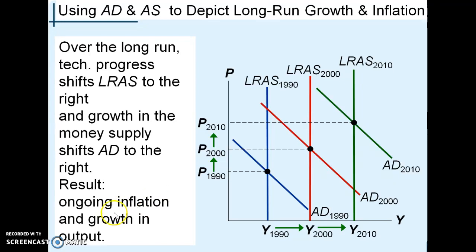So to summarize: inflation and output growth. Hopefully that explains the long-run model we see in the economy. We're going to use the short-run model to help explain recessions.